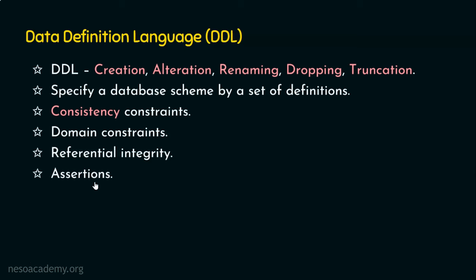Coming to authorization: this simply means who can access what data item. Authorization deals with the privileges held by the user who accesses the database. Authorization can be read authorization, insert authorization, update authorization, or delete authorization. A user with read authorization can read data but not write. Insert authorization allows inserting records. Update authorization allows updating the database. Delete authorization is required to delete data. We may assign all, none, or any combination of these authorizations — read, insert, update, or delete.